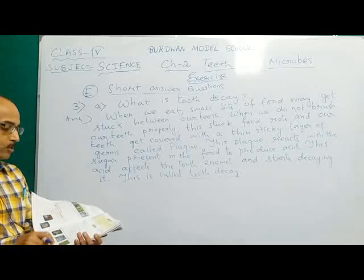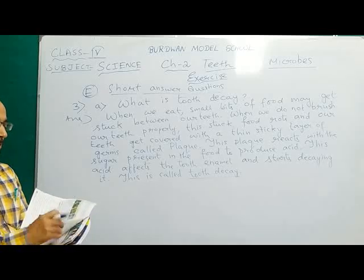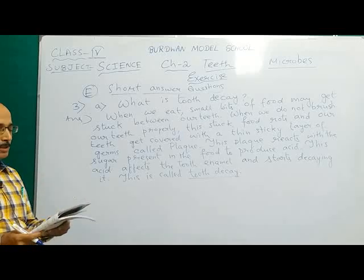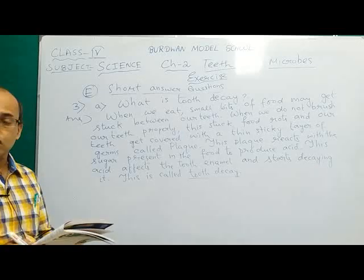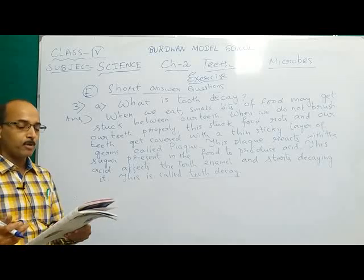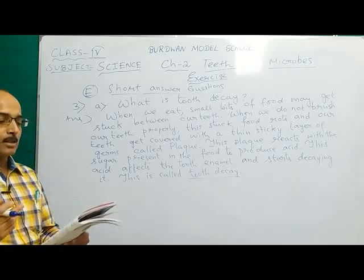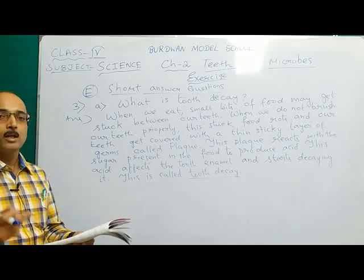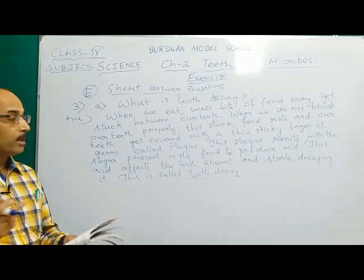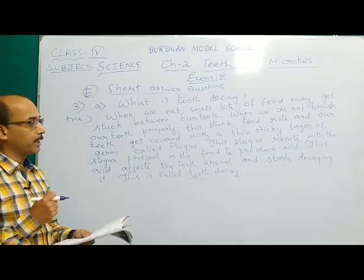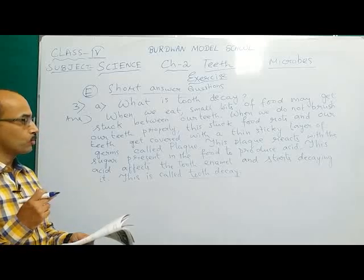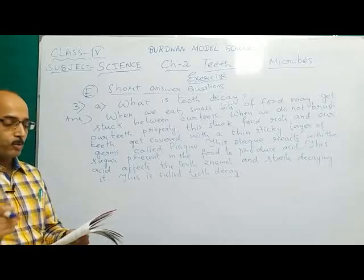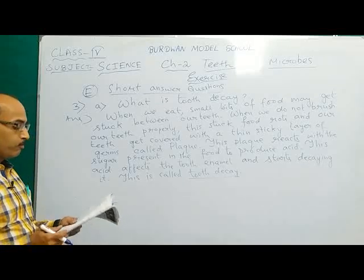Now question B, 3B, is a value corner question. What do you learn from Nitika? Nitika is telling her friend not to eat too many sweets and chocolates because eating too many sweets and chocolates will cause tooth decay. This type of food should be avoided. We will go to question number 4 now.